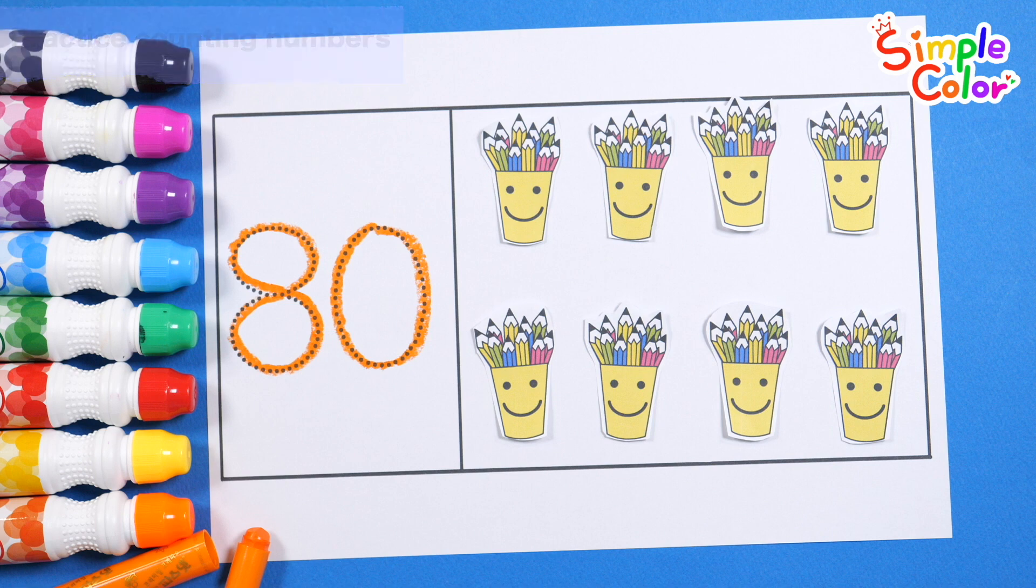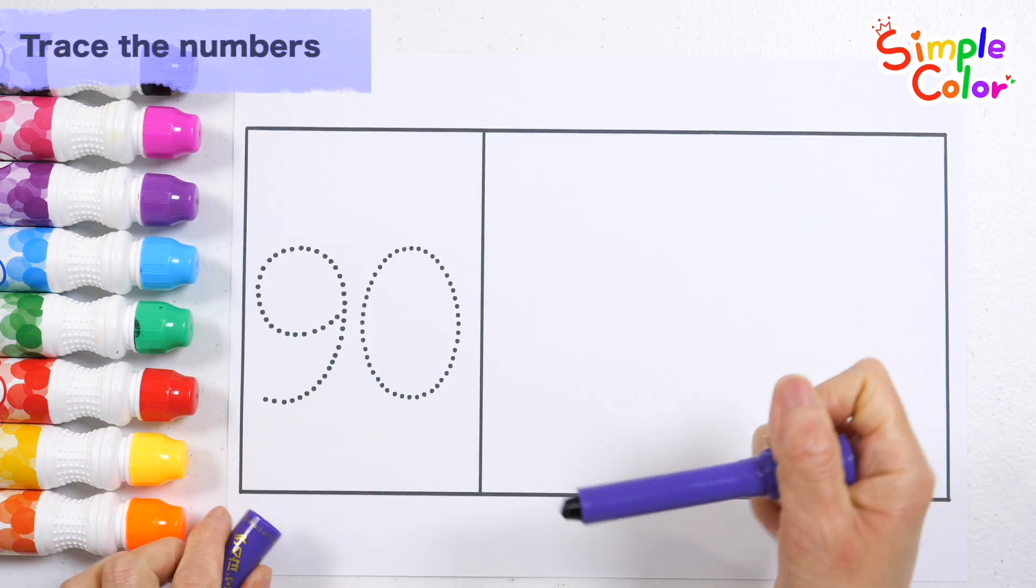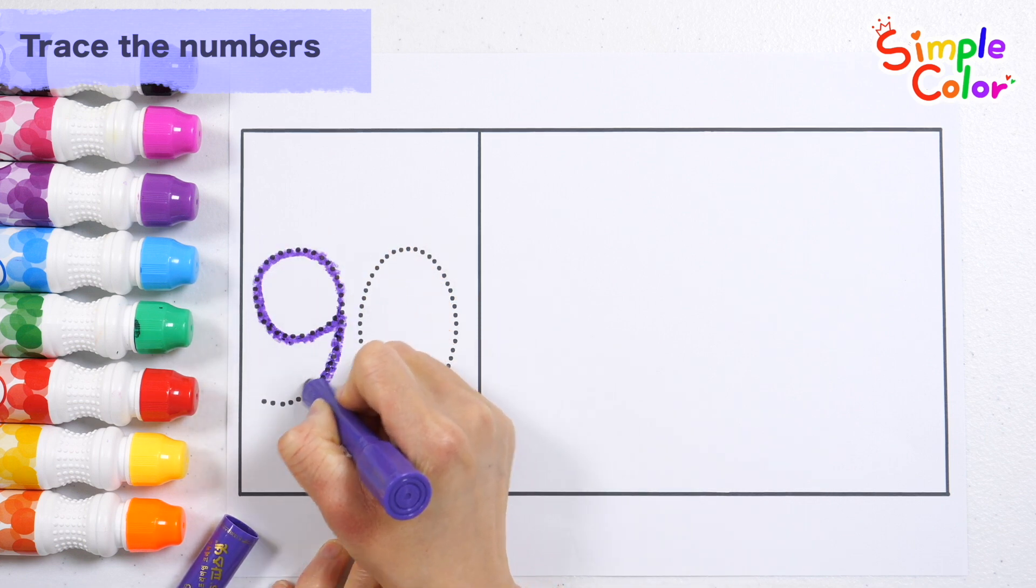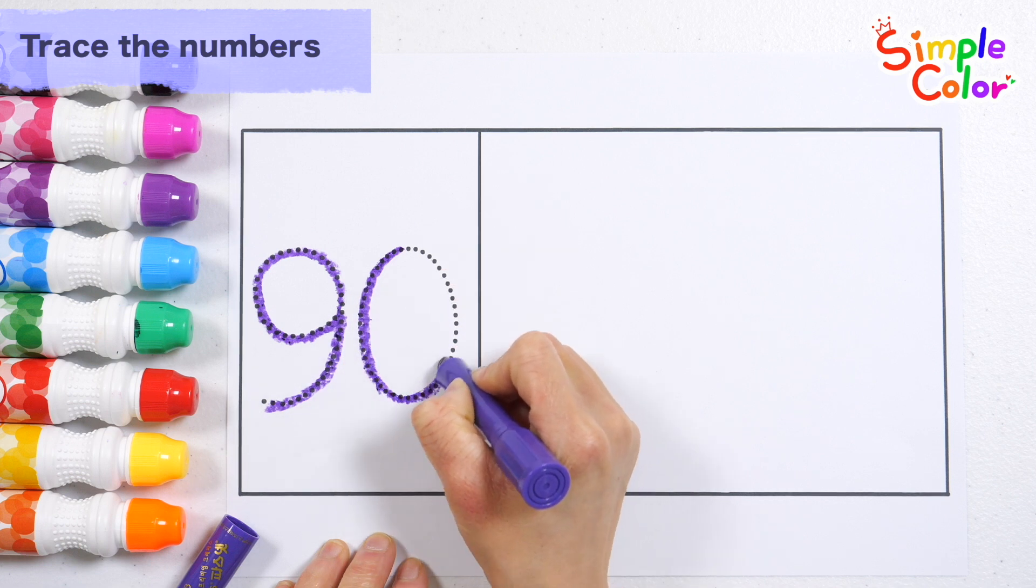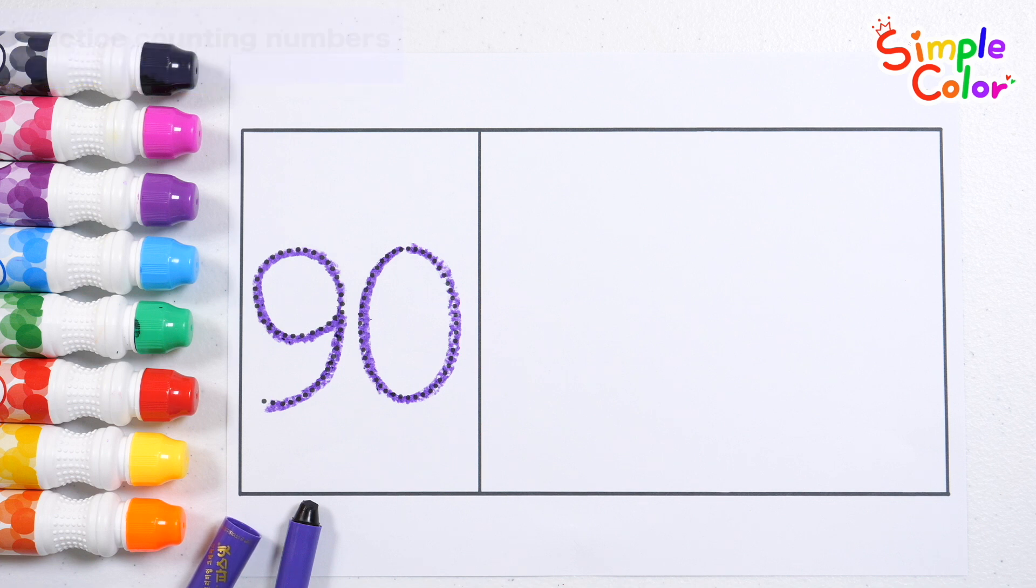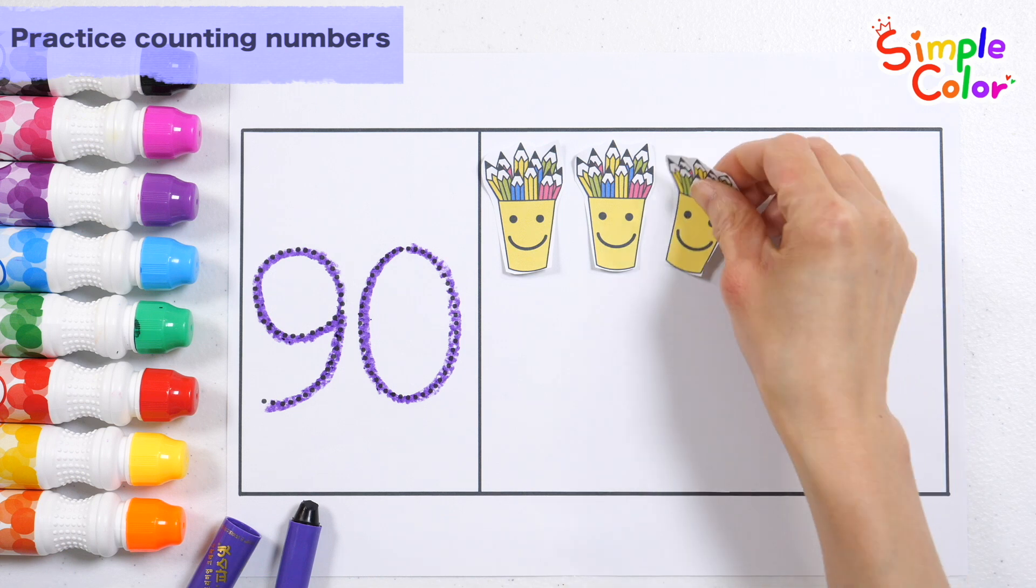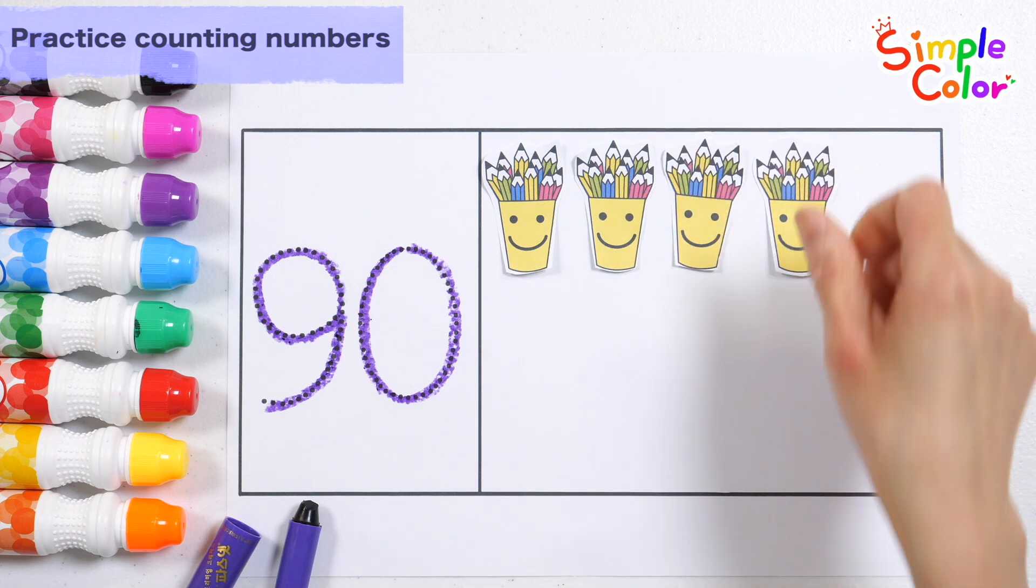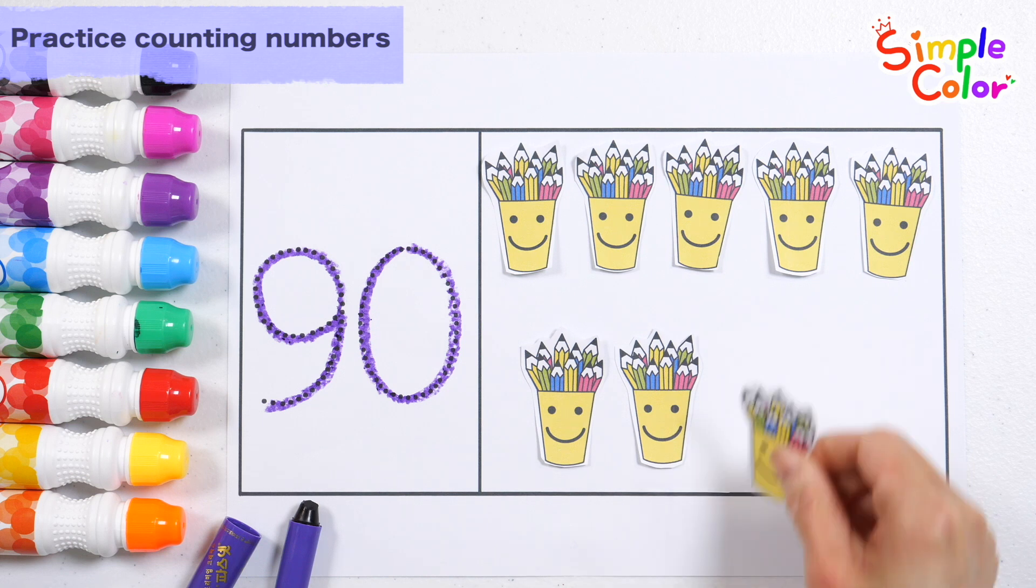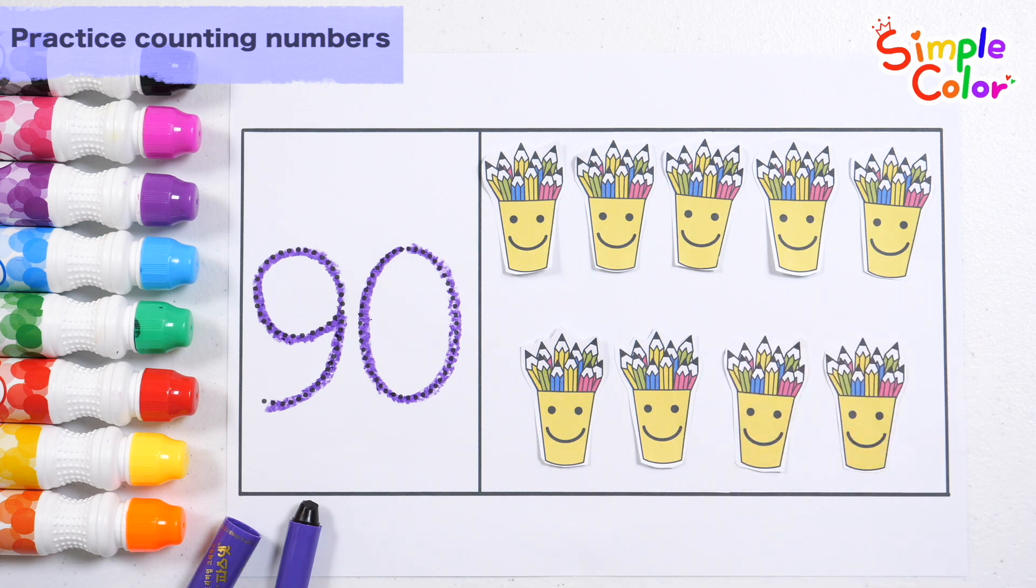80 pencils. Let's write numbers with purple crayon. 90. Shall we place the pencil drawing at number 90? 10, 20, 30, 40, 50, 60, 70, 80, 90. 90 pencils. Great job!